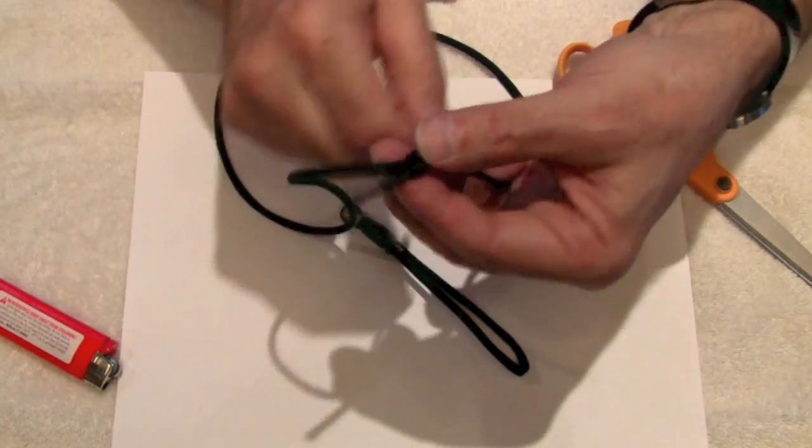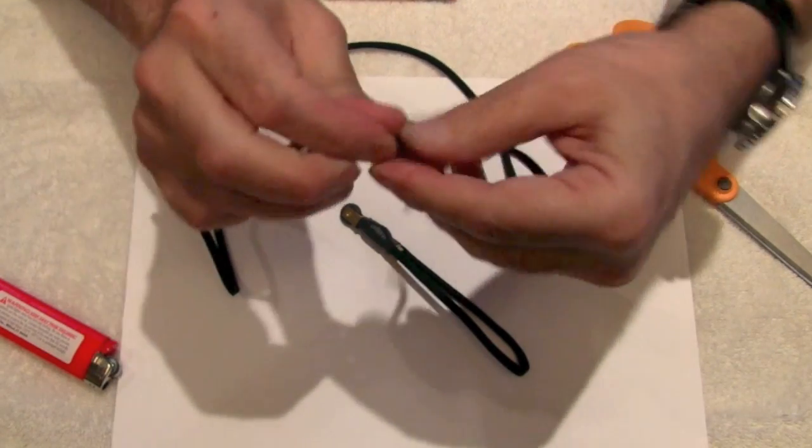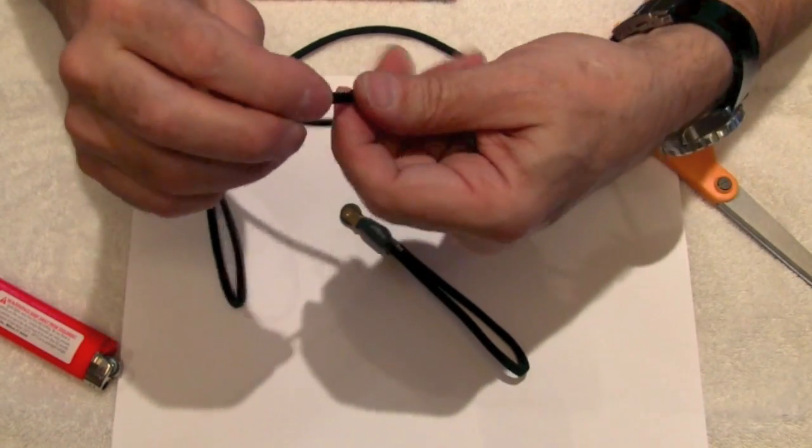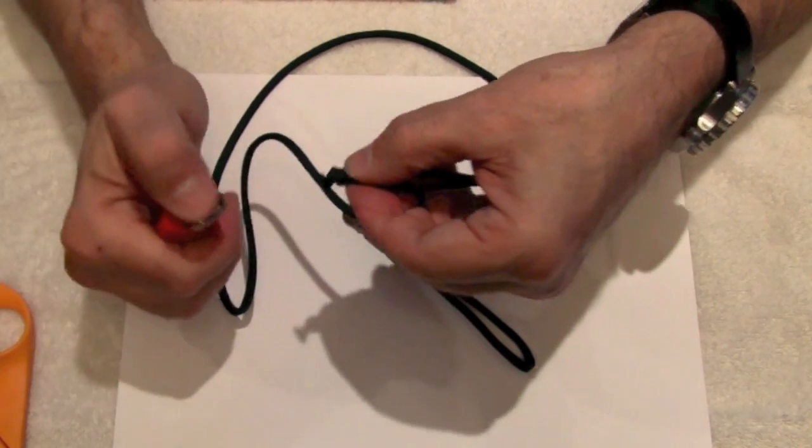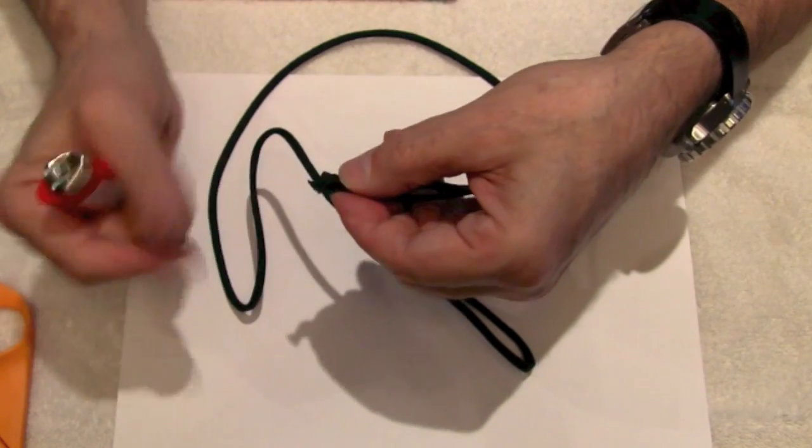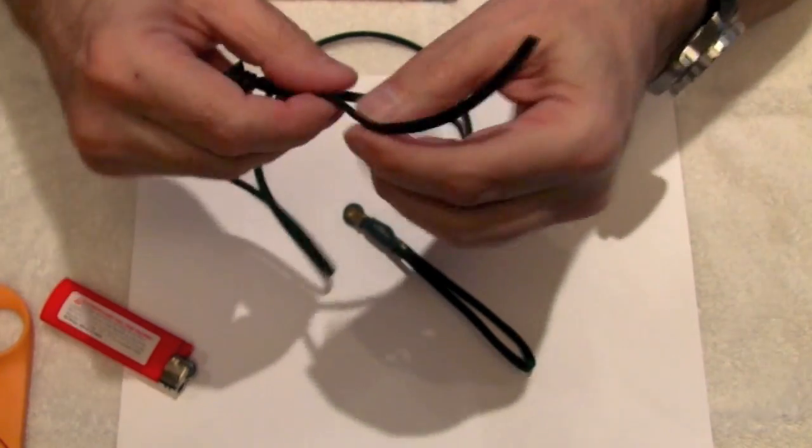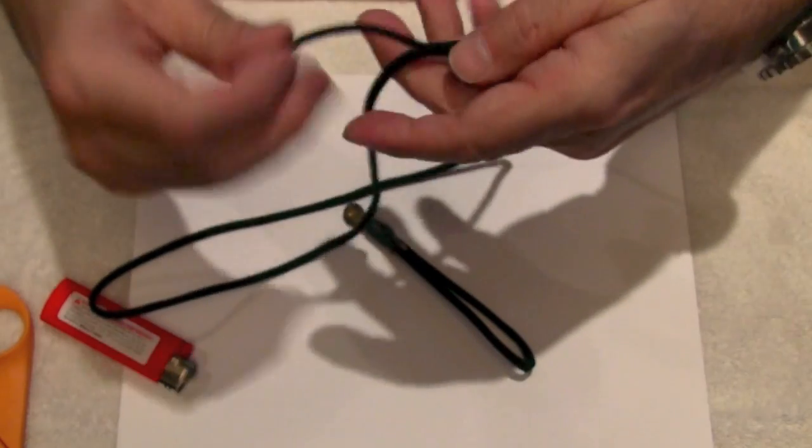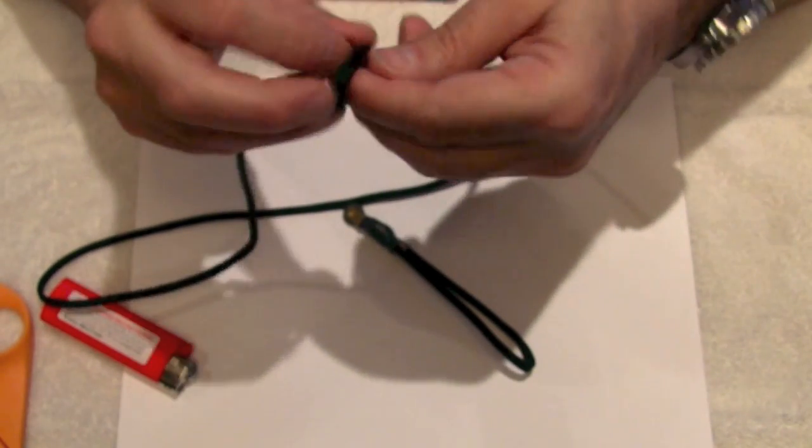So this one now runs freely through there. I'll pull that tight and trim that off, and we'll just heat seal that. And we do the same thing on the other end, just an overhand knot.